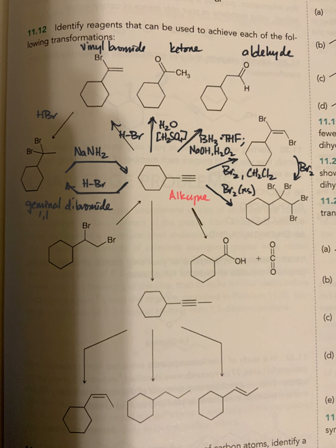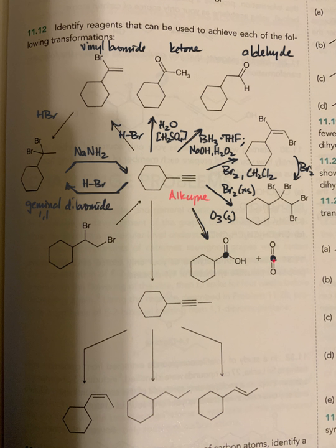Here we're oxidizing each carbon of the alkyne — this is an ozonolysis reaction using ozone gas. What happens is oxidative cleavage of each sp-hybridized carbon, forming a carboxylic acid and carbon dioxide. The carboxylic acid carbon is at oxidation state three and the CO₂ carbon is at oxidation state four.